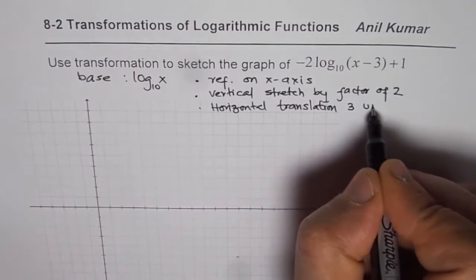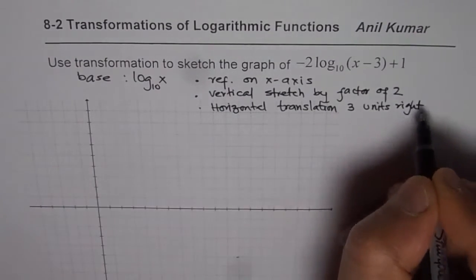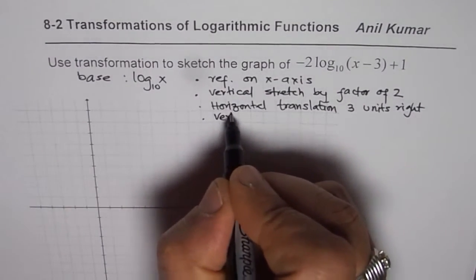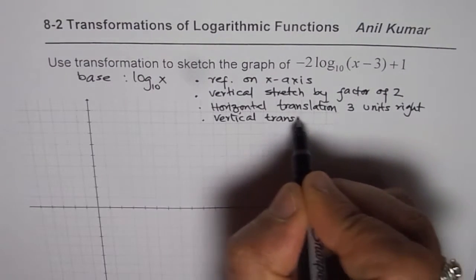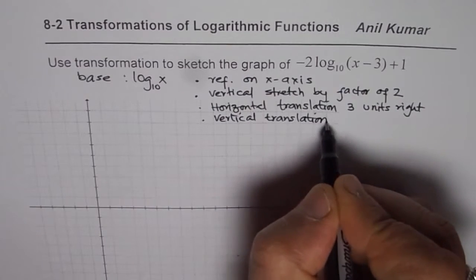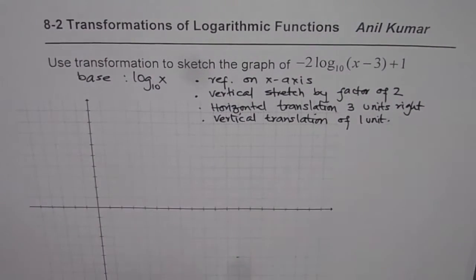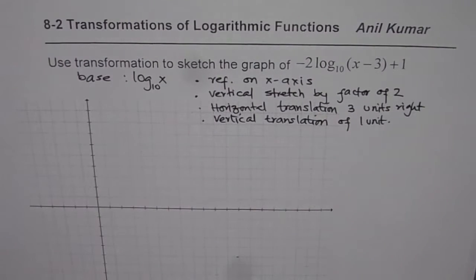Three units right, and we have a vertical translation of 1 unit. What we will do is first sketch log to the base 10 of x, the base function, and then perform these transformations.